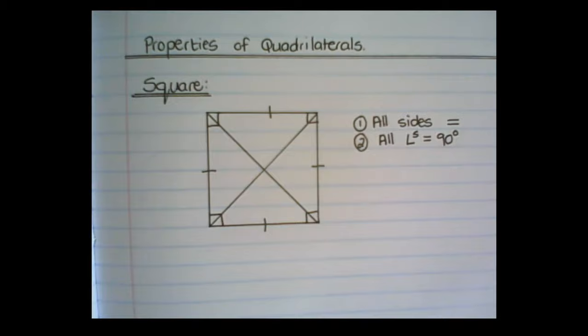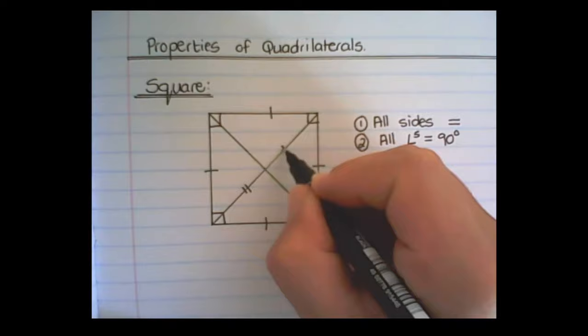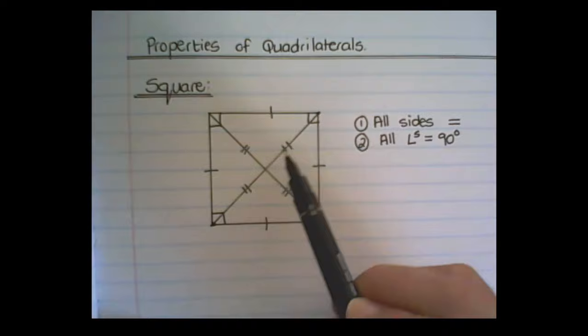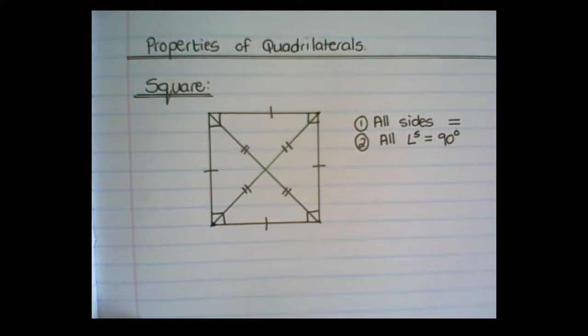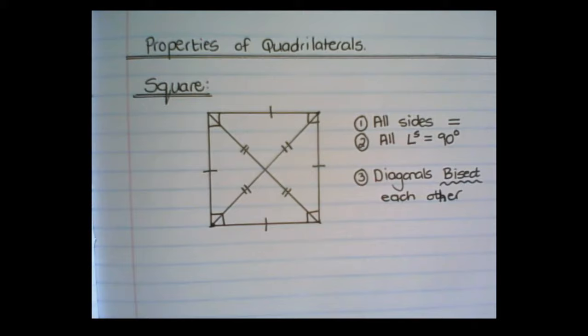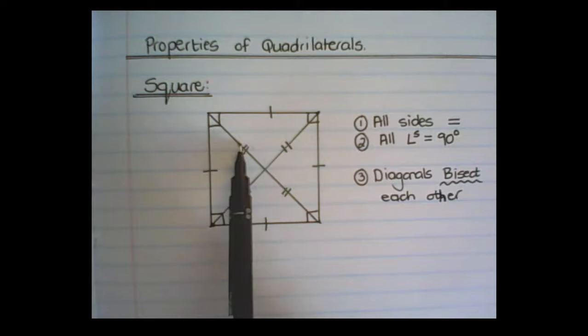Some new properties are that the diagonals bisect each other, meaning that the lines going from corner to corner in the square cut each other in half. The word for cut in half in mathematics is bisect. It also means that the diagonals are equal in length and that all of the halves would be equal in length.